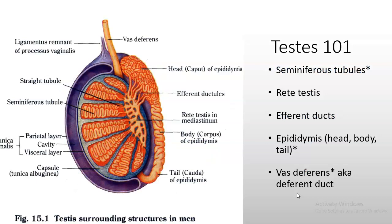Working from inside to outside, the testes contain the seminiferous tubules, the rete testes, the efferent ducts, the epididymis, and the vas deferens. The key structures to know are the seminiferous tubules, the epididymis, and the vas deferens — you should understand their purpose.